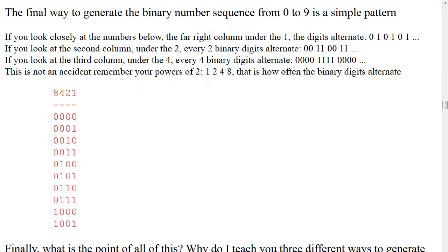A final way to generate the binary sequence from 0 to 9 is a simple pattern. In the far right column under the 1, the digits alternate every digit: 0, 1, 0, 1. In the second column under the 2, every two binary digits alternate: 0, 0, 1, 1, 0, 0, 1, 1. In the third column under the 4, every four binary digits alternate. This is not an accident — it reflects your powers of 2: 1, 2, 4, 8.